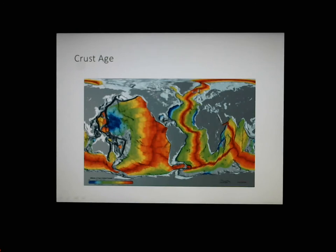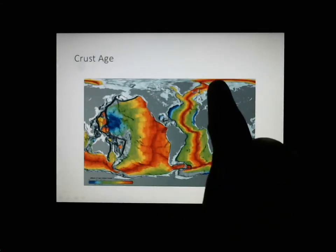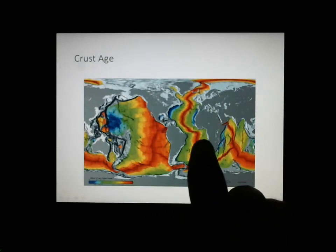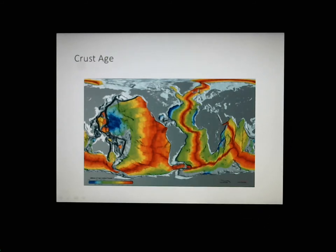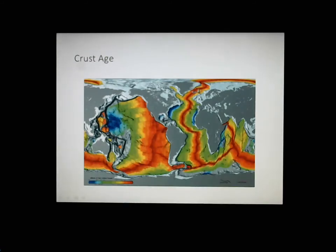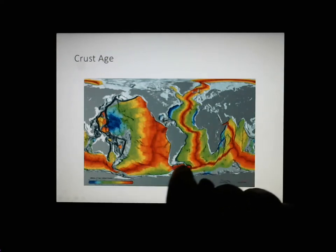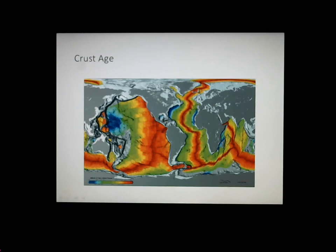This is a great map that looks at the age of the oceanic crust. The red areas are the youngest Earth, then orange, yellow, then green — and you've got some blues over here that are very old; they've been spread apart for quite some time. You can see areas where new stuff is being made along these cracks, and areas where it's being destroyed — these bluish regions.